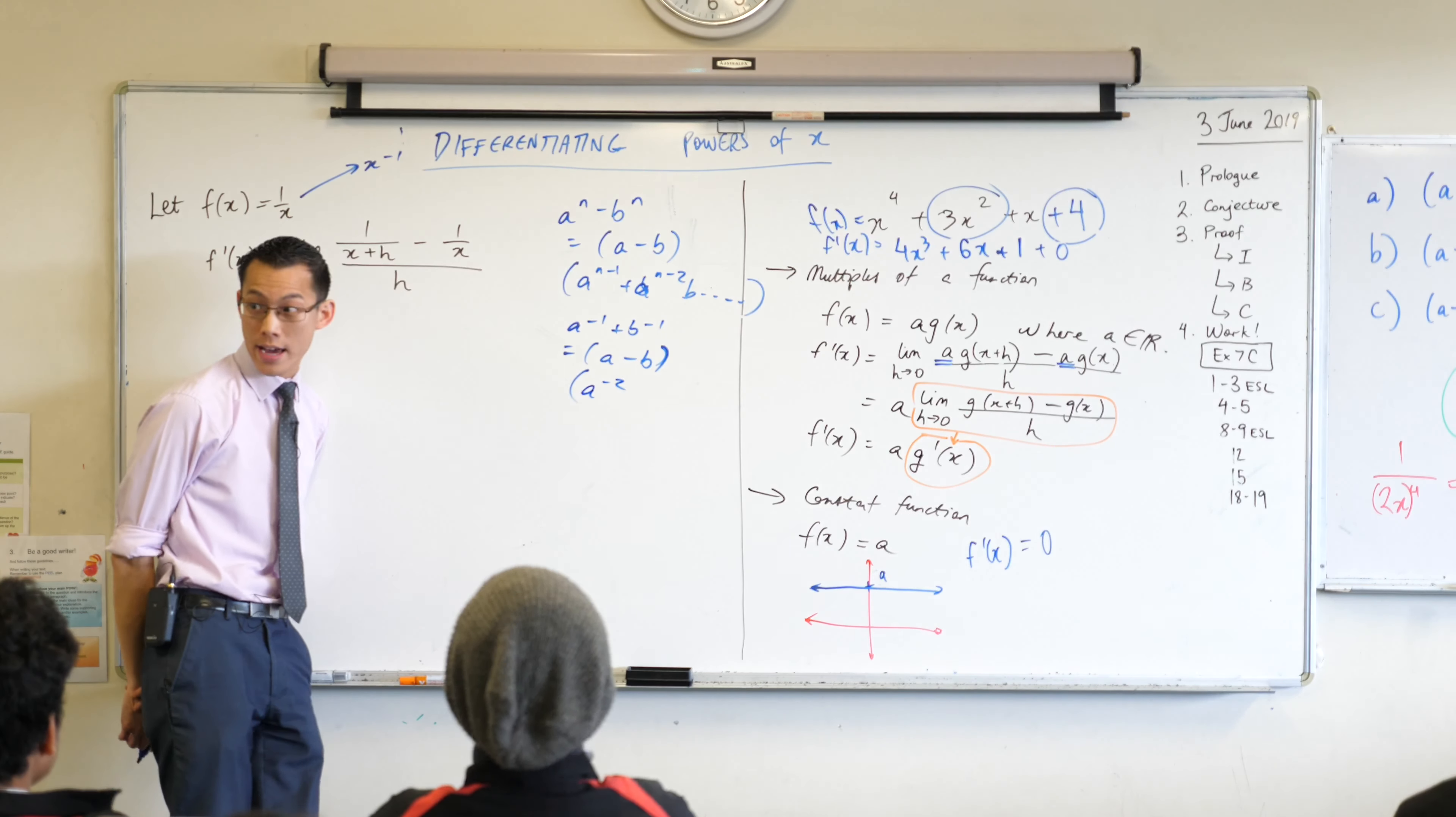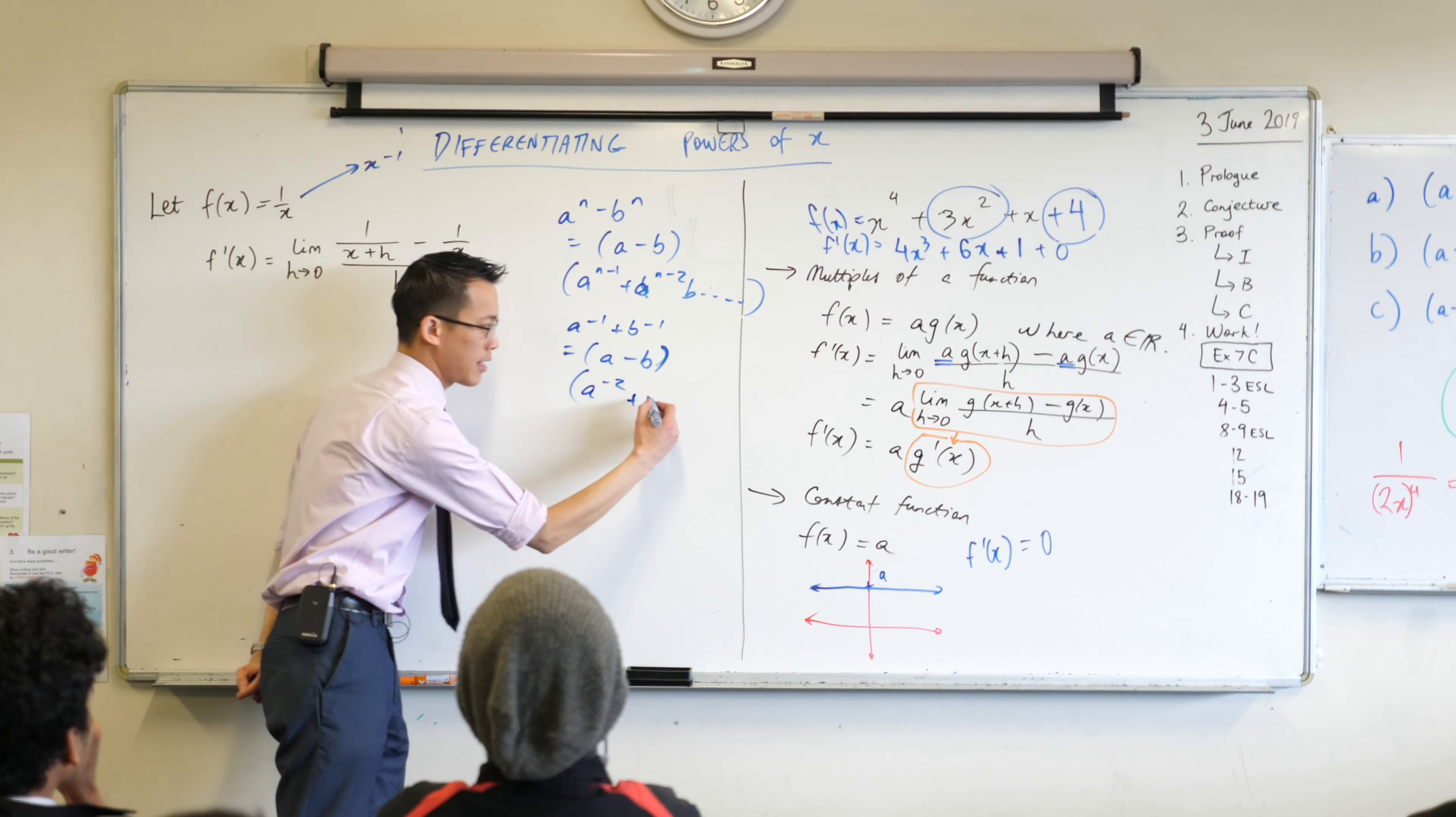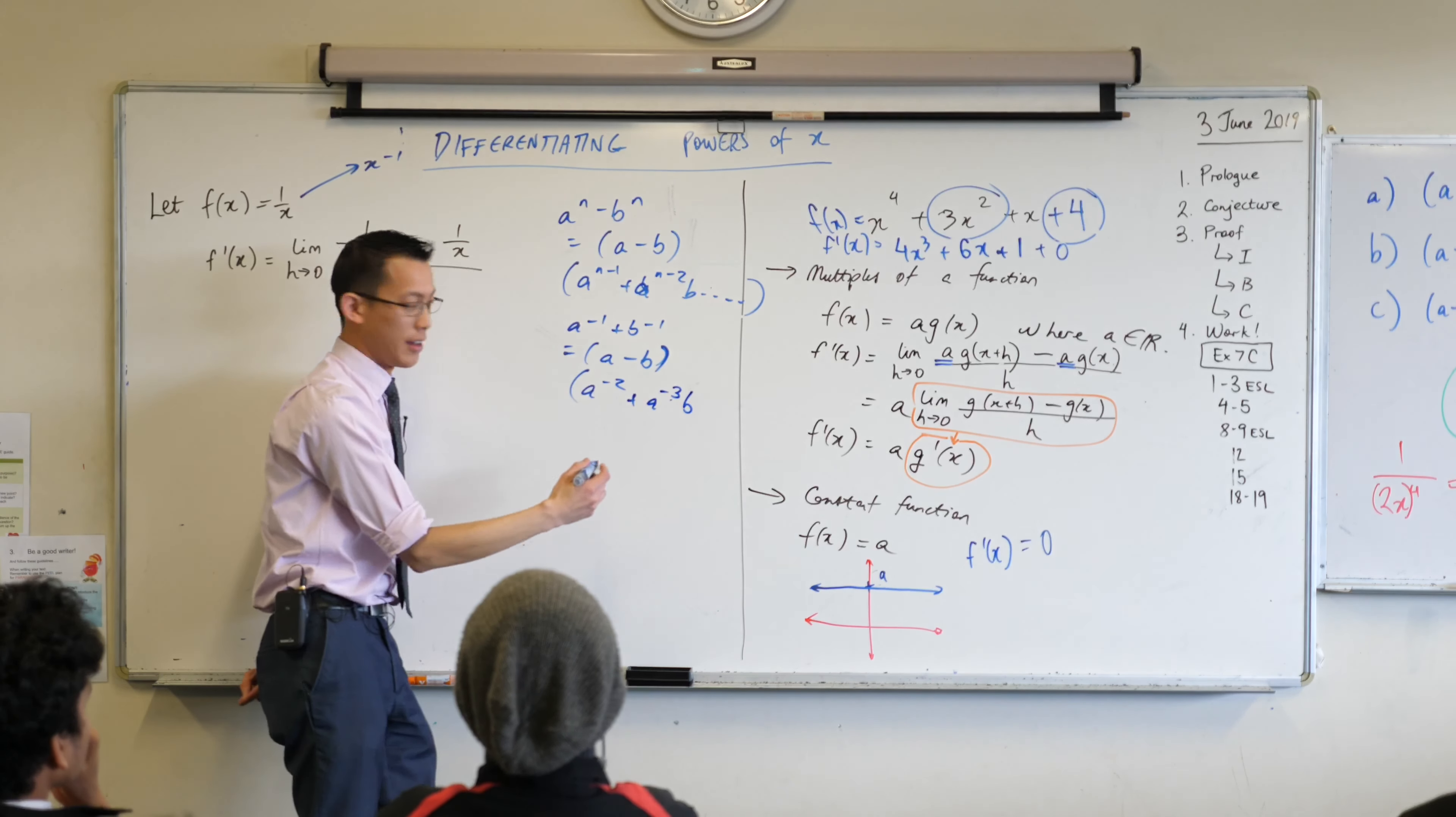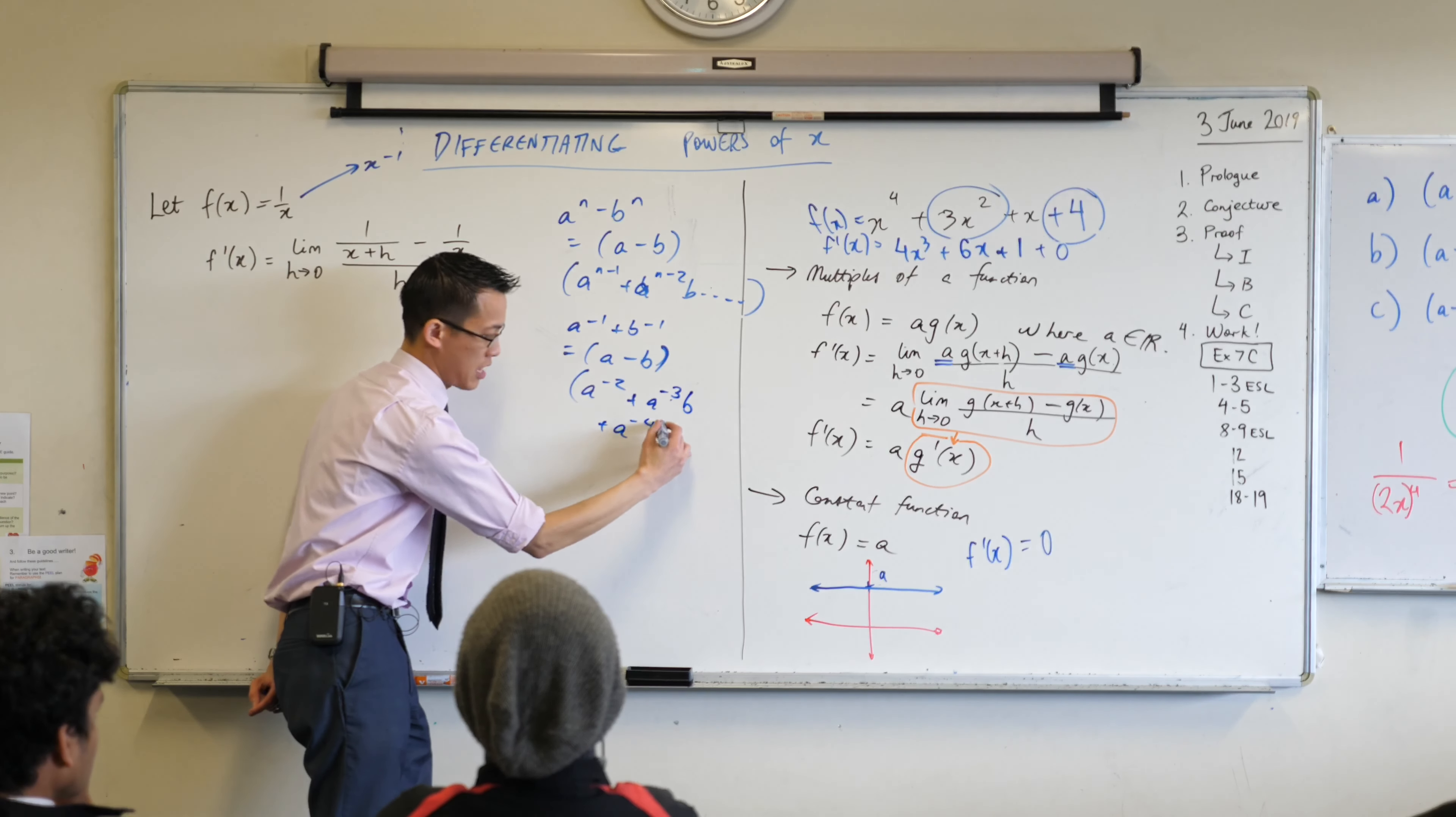And then what would the next term be? a to the negative - I meant to keep going down, right? Keep going down. So the next one down is negative three and then you get a b for some reason, and then what's the next one down? a to the negative four and then you get another b.